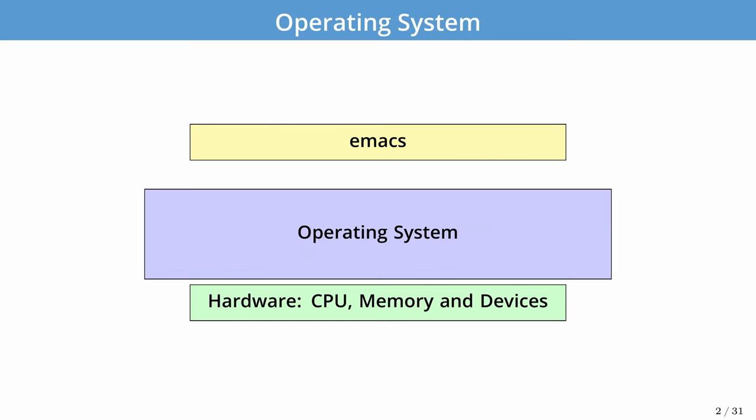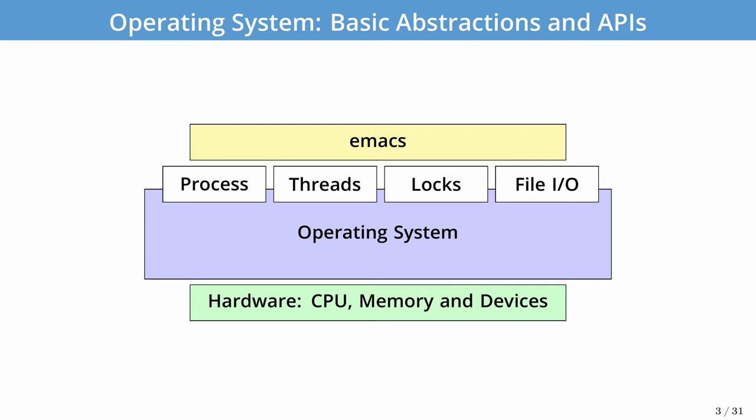We can see in this diagram that Emacs is running on top of the operating system, which provides an abstraction from all the details of hardware — the CPU, memory, and devices. The operating system provides a set of abstractions; here I'm showing four of the main ones.